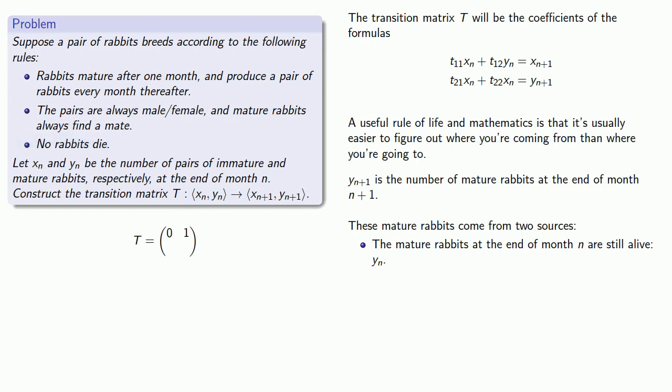In addition, we've assumed that the immature rabbits will become mature after one month. So all of the immature rabbits at the end of month n are now mature rabbits. And so this adds xn to the total number of mature rabbits. And so yn plus 1 is going to be xn plus yn.